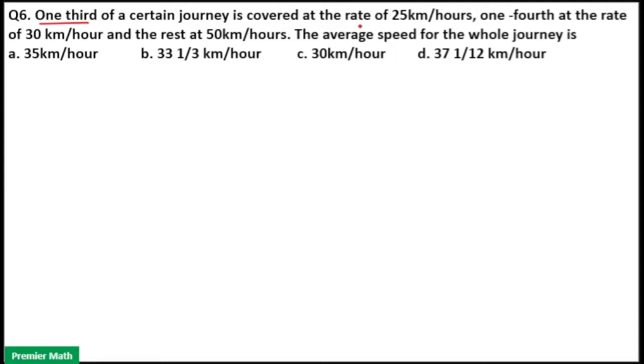One-third of a certain journey is covered at the rate of 25 km per hour, one-fourth at the rate of 30 km per hour and rest at 50 km per hour. The average speed for the whole journey is.